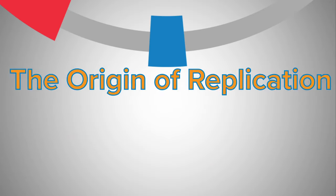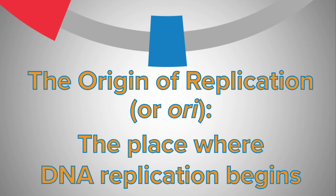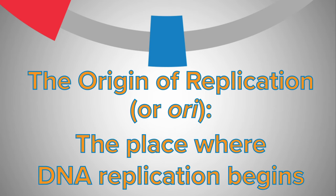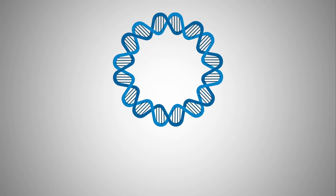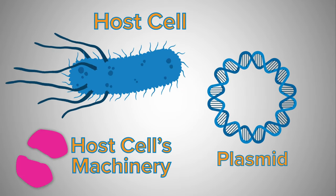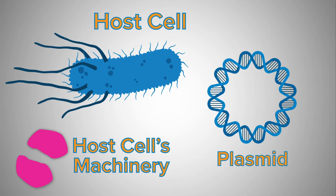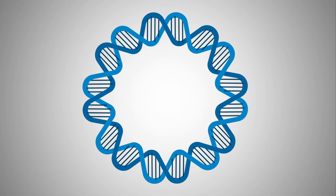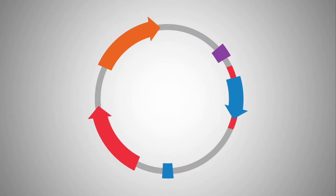The origin of replication, or ori, is the place where DNA replication begins. The origins of replication in plasmids are generally different from the ones used to create the host's chromosomal DNA. But like their chromosomal counterparts, they still rely on the host cell's machinery to make additional copies. We'll explain why that's important to keep in mind a little later. For now, let's take a closer look at the makeup of these plasmid oris.